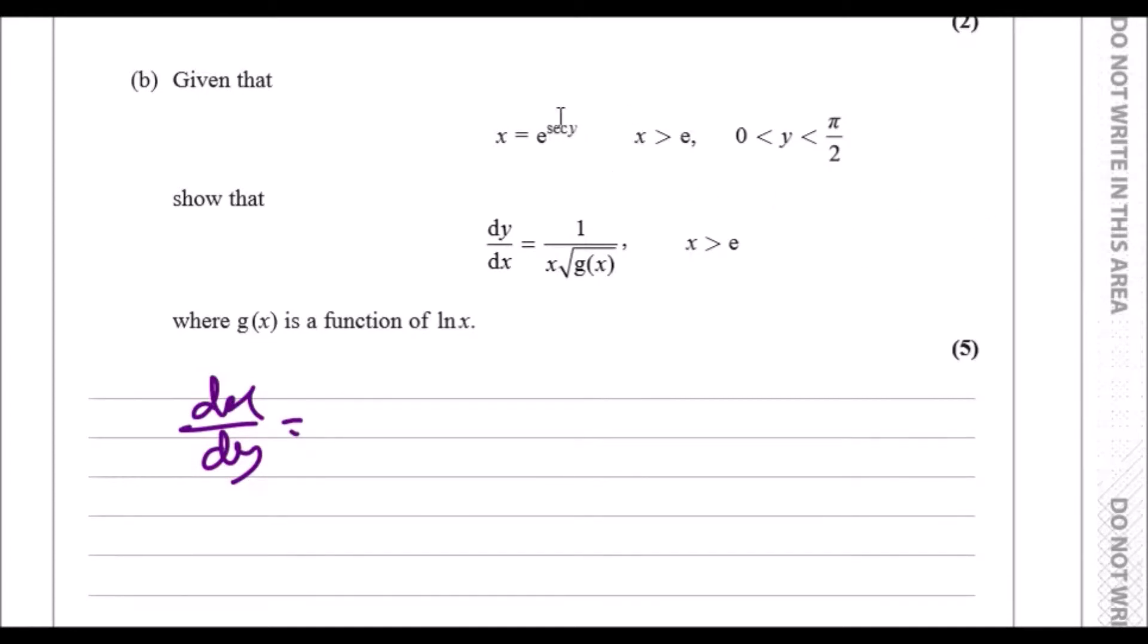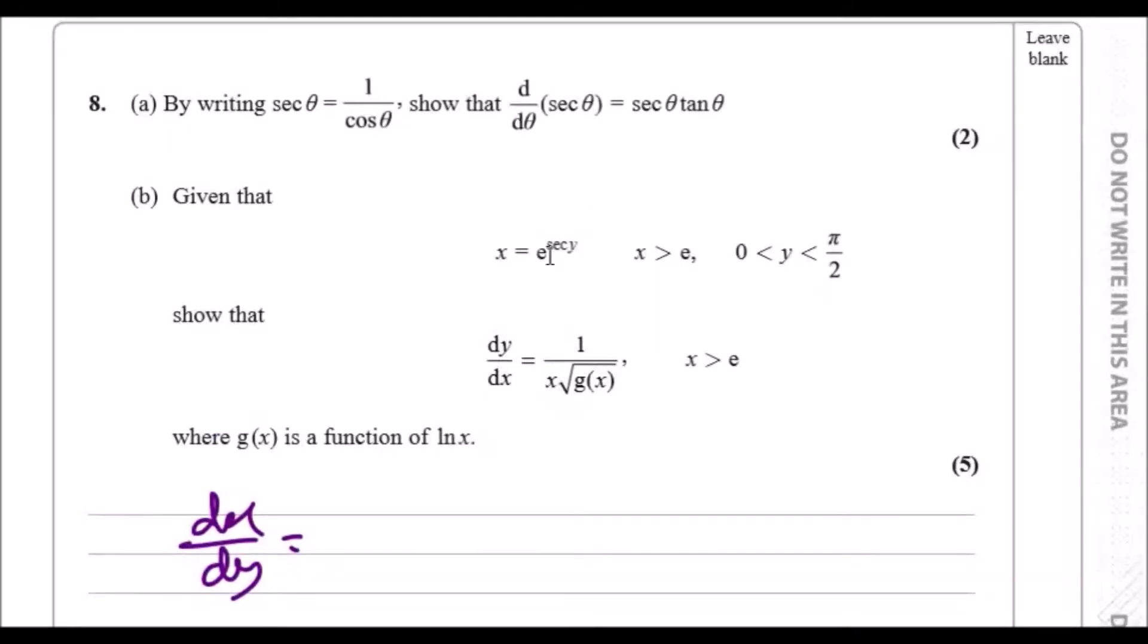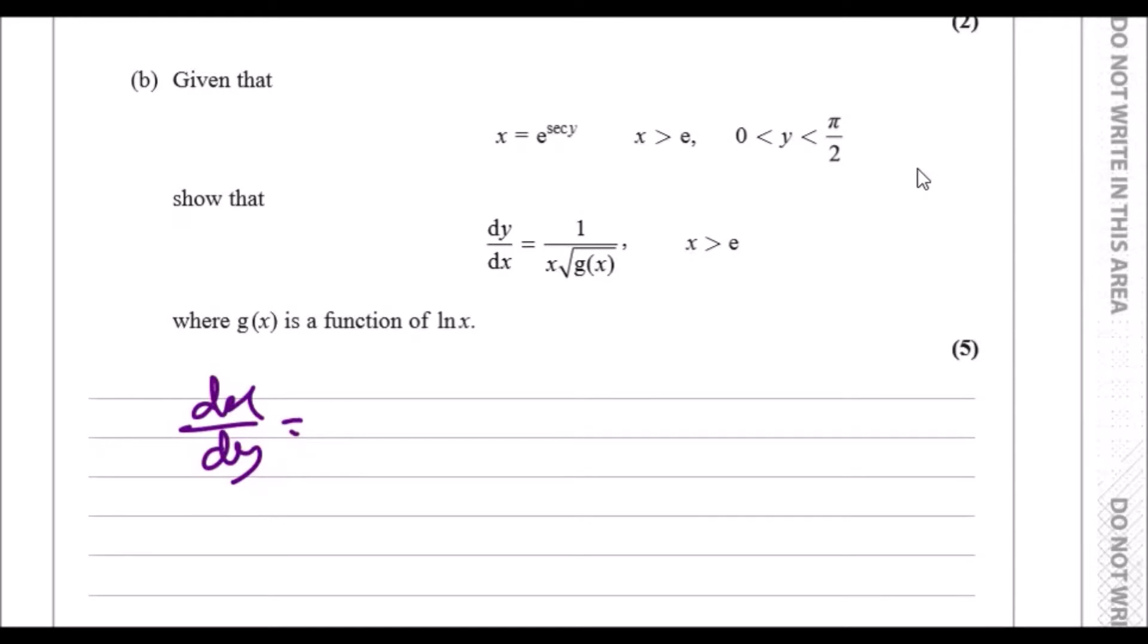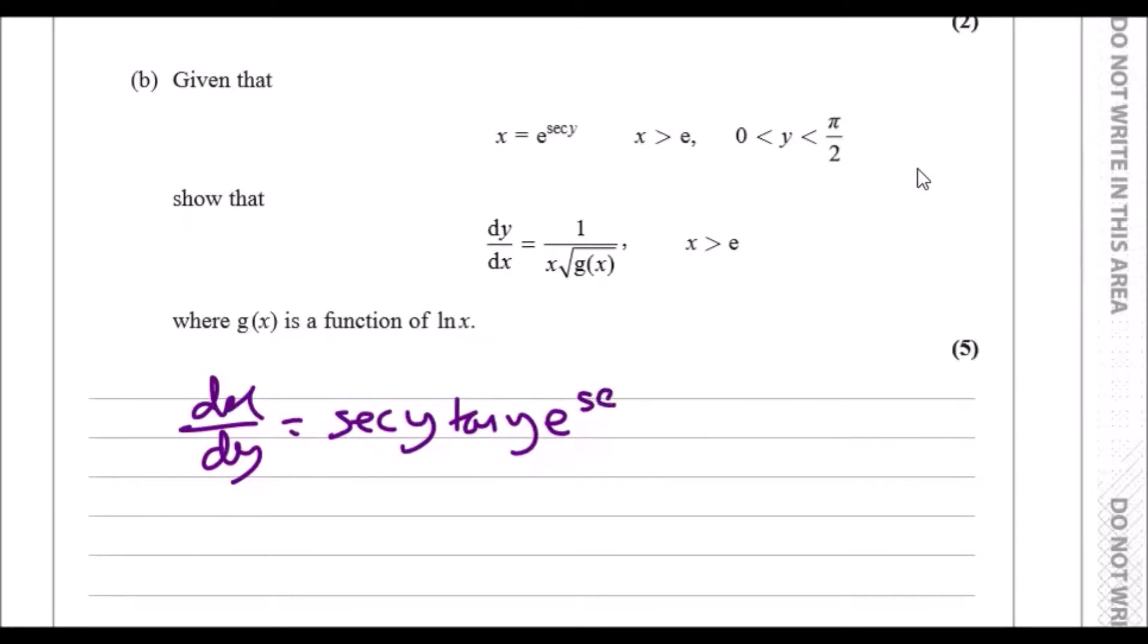Let's go ahead and differentiate e to the sec y. Every time you differentiate an exponential, you always drop the power on the ground, so differentiating sec is going to be sec tan. It'll be sec y tan y, and then you just copy the exponential as always.